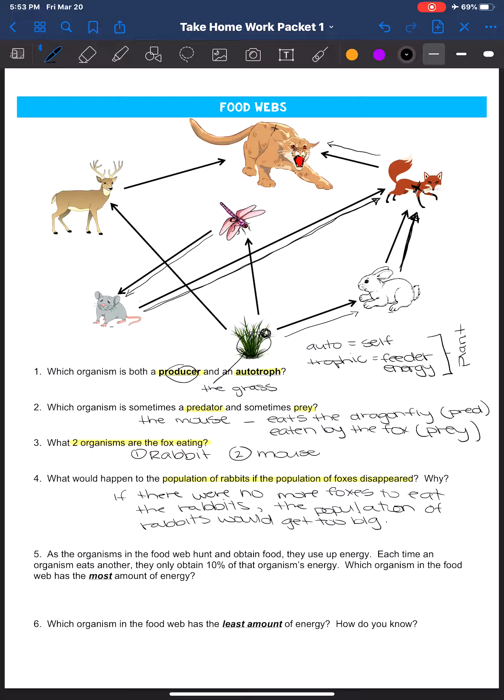As the organisms in the food web hunt and obtain food, they use up energy, which is true. Each time an organism eats another, they only obtain 10% of that organism's energy. When we talked about cellular energy, we talked about the rule of 10%. Which organism in the food web has the most amount of energy? We said that all energy either directly or indirectly comes from the sun. The sun is part of this pyramid, and the sun gives its energy directly to those autotrophs. So having the most energy would be the grass.